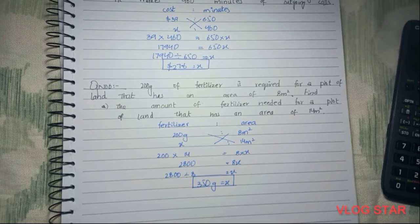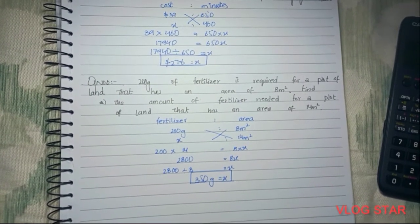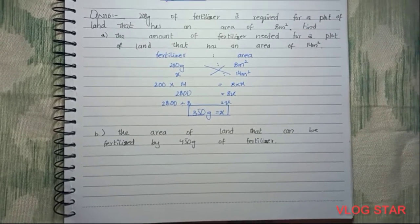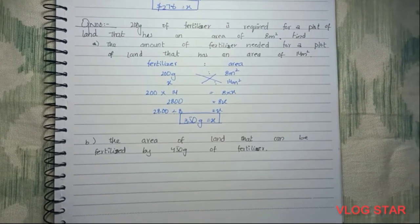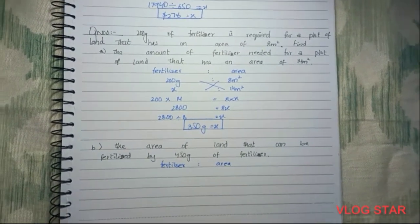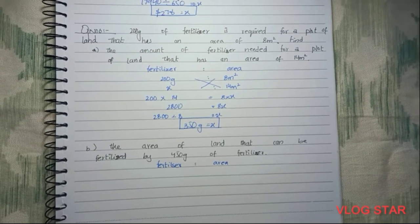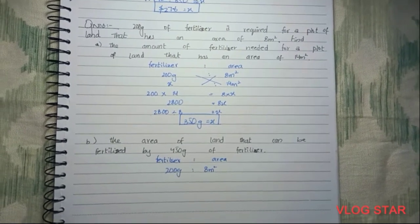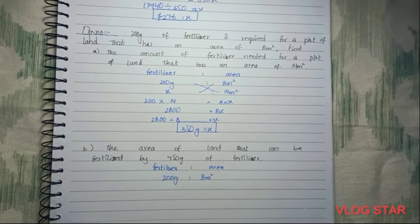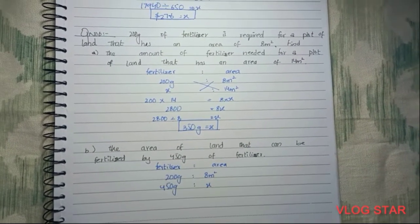350 grams of fertilizer is required for a plot of land with an area of 14 meters squared. Moving on to part b: find the area of land that can be fertilized by 450 grams of fertilizer. We use the ratio: fertilizer to area. The area is unknown, so we consider it as x, and the fertilizer is 450 grams.